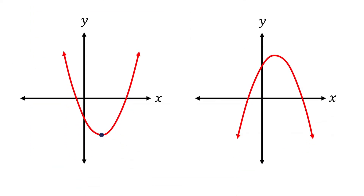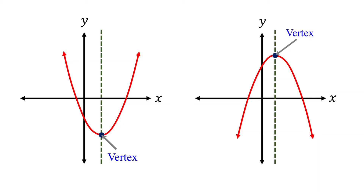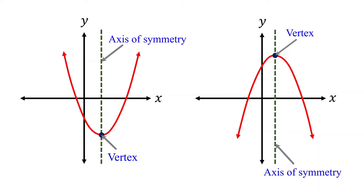The vertex is the lowest or the highest point on a parabola. If a parabola opens upward, the vertex is its lowest point. If a parabola opens downward, the vertex is its highest point. The axis of symmetry is a vertical line that passes through the vertex, dividing the parabola into two equal halves.